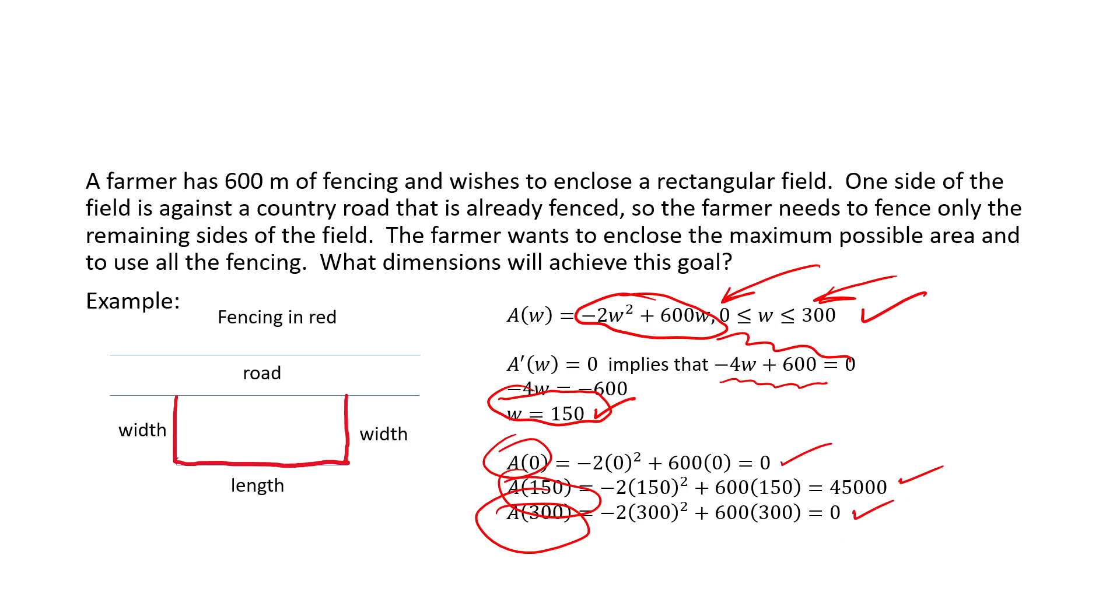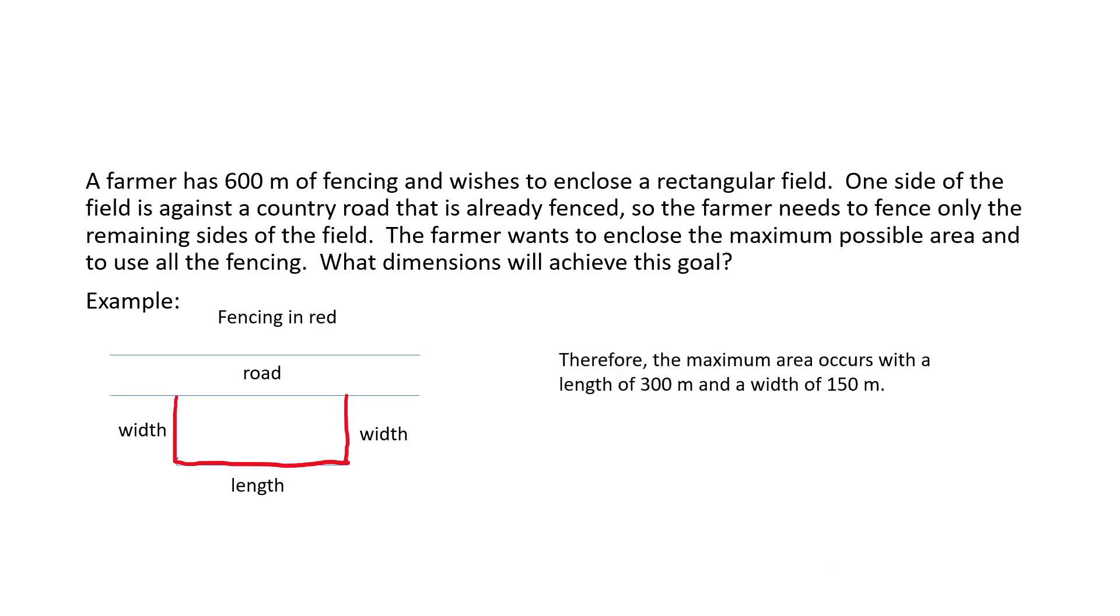So the maximum possible area in this scenario is 45,000. The question specifically asked for the dimensions, not the area itself. A width of 150 achieved our goal, and since L plus 2W is equal to 600, it's easy to determine that our length should be 300. And so we can write an appropriate therefore statement.